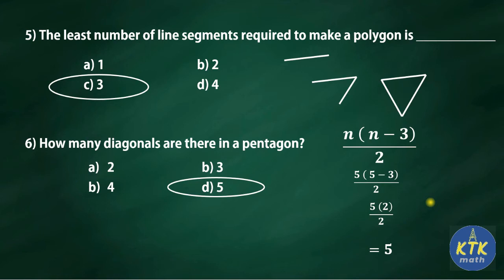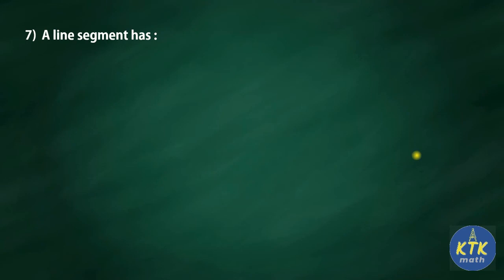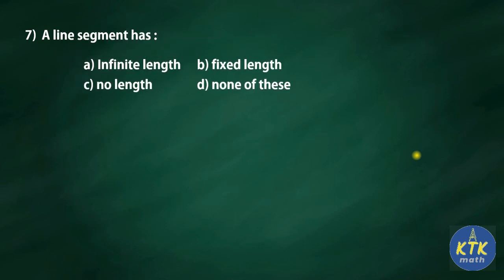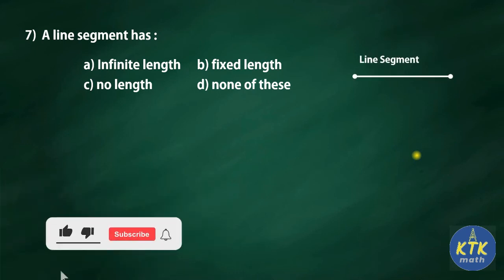Using the formula method you can easily find the number of diagonals for any polygon — for example, a 10-sided or 12-sided polygon — without drawing the diagram. Seventh question: a line segment has — options are infinite length, fixed length, no length, or none of these. Since a line segment has two endpoints it is measurable, so it has a fixed length. Answer: fixed length.